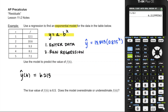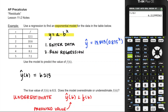The true value of f(6) is 6.5. Did the model overestimate or underestimate? We know f(6) is actually 6.5 and we predicted it to be 6.213 from the model — so that would be an underestimate. More formally, it's because y-hat, the predicted value, was less than f(6). Y-hat was the predicted value from the model, whereas f(6) was the true value of the function.